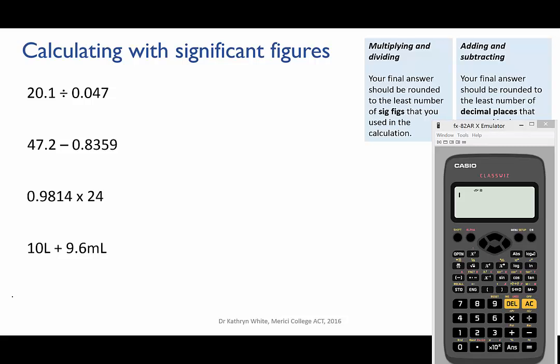So let's try some examples. Firstly, 20.1 divided by 0.047. We put that into the calculator and we get 427.65957, etc.